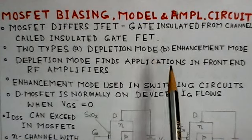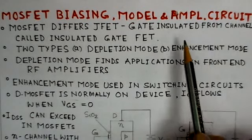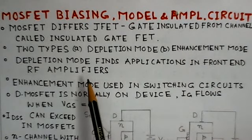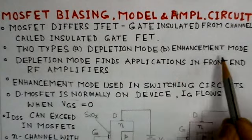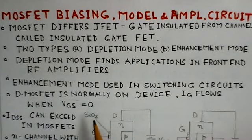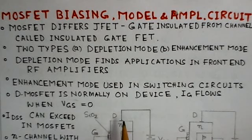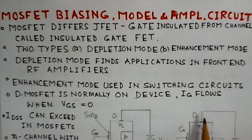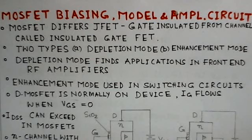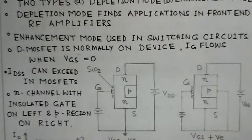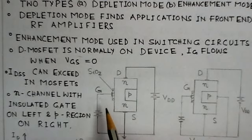MOSFETs differ from junction FETs with an insulated gate. Basically, we have two types of MOSFET: depletion mode and enhancement mode. Depletion mode finds application in the front end of RF amplifiers, while enhancement mode is used in most switching circuits. The D-MOSFET is a normally-on device, meaning drain current flows when VGS is zero, and IDSS can be exceeded in MOSFETs. The N-channel construction has an insulated gate on the left and a P-region on the right.